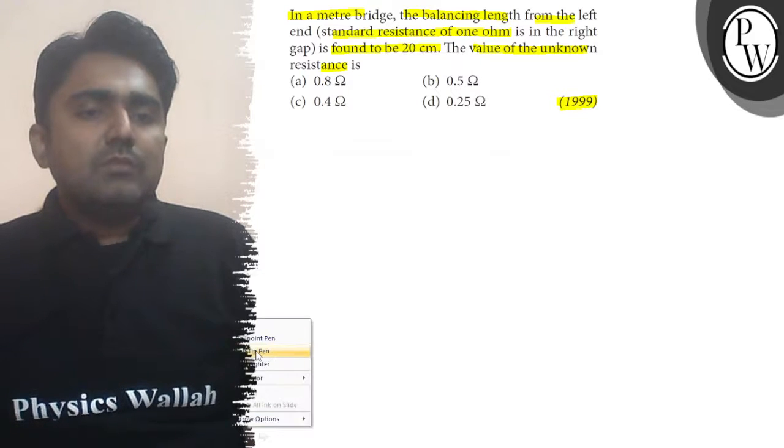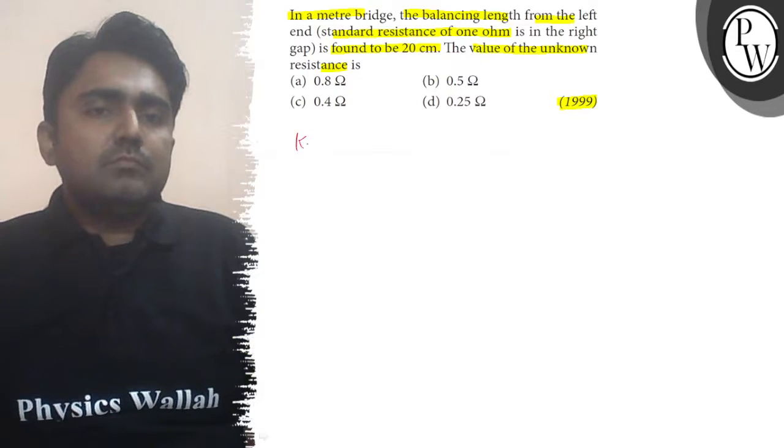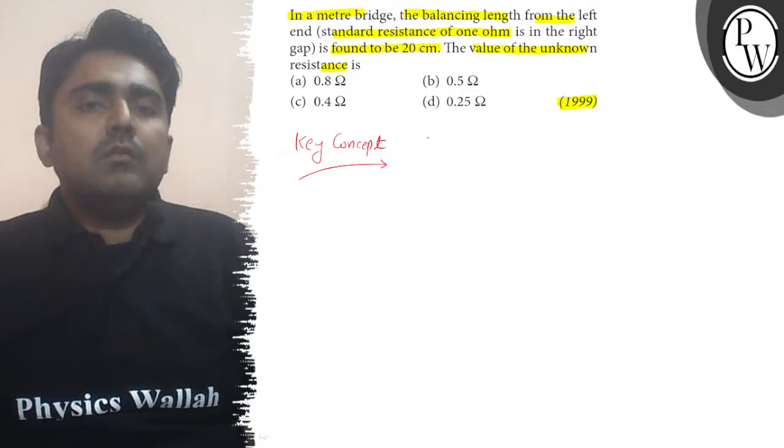To solve this, our key concept will be P upon Q is equal to L upon 100 minus L, because in a meter bridge...